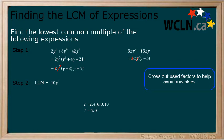There is an x in one expression but not the other, so we add x. There is a factor of (y-3) in each expression that can be added now. Finally, there is a factor of (y+7). And now we have the lowest common multiple of these two expressions.